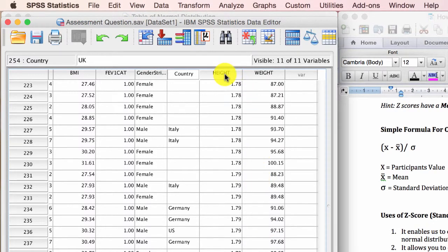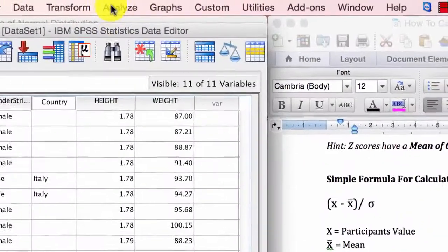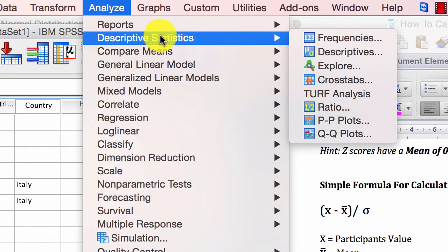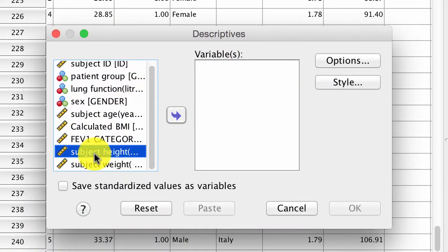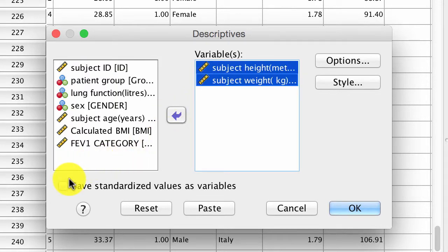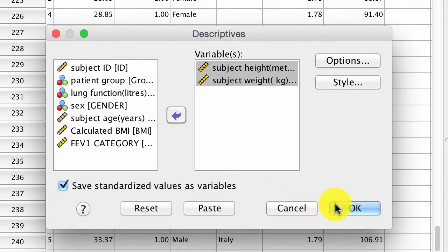We want to add height and weight together in order to come up with body size. To standardize scores or get Z values in SPSS, go to Analyze, Descriptive Statistics, and move into Descriptives. Move in your height and your weight, the subject height and subject weight, move it in. And all you have to do is save standardized values, also known as Z values, and just click OK.